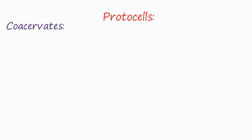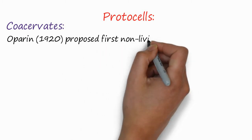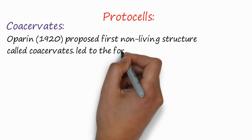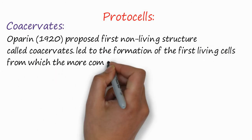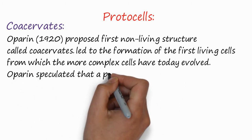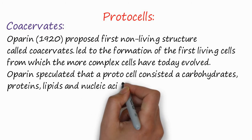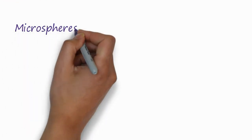The question arises: what do we know about the first cells? In the 1920s, it was proposed that the first cells were coacervates, which are non-living structures that led to the formation of the first living cells, from which more complex cells of today evolved. Oparin speculated that a protocell consisted of carbohydrates, proteins, lipids, and nucleic acids. You can see here the coacervates in a water surrounding.